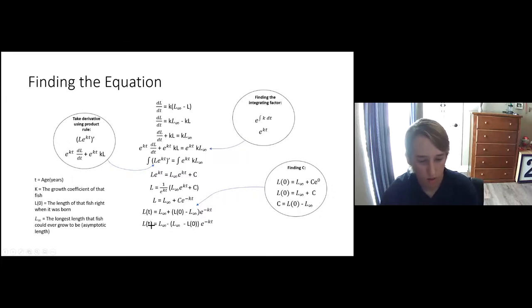And then we take out a negative one just to make it look a little bit nicer in my opinion. So we're left with this final equation where t is equal to the age, k is the growth coefficient or the growth rate of that fish, L_0 is the length of the fish right when it was born, and then L_∞ is the longest length that fish could ever really be.